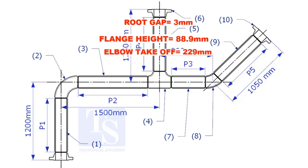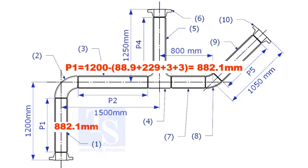Substitute the sum of the height of the flange, elbow takeoff, and two root gaps from the total length of 1500. Length of pipe P1 is 882.1mm.